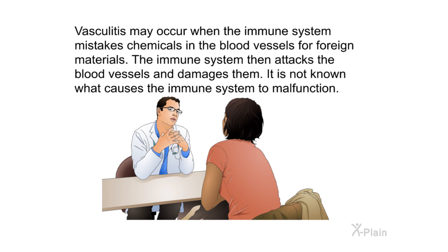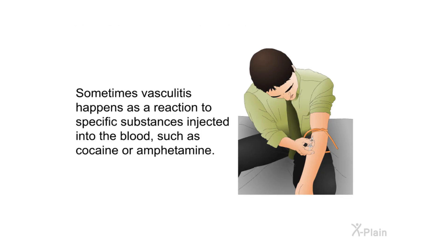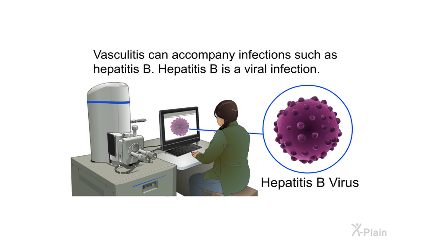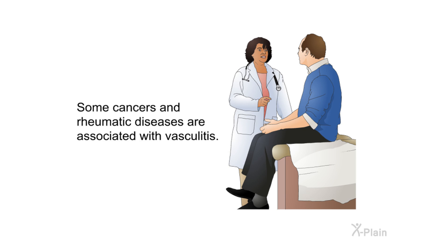Vasculitis may occur when the immune system mistakes chemicals in the blood vessels for foreign materials. The immune system then attacks the blood vessels and damages them. It is not known what causes the immune system to malfunction. Sometimes vasculitis happens as a reaction to specific substances injected into the blood, such as cocaine or amphetamine. Vasculitis can accompany infections such as hepatitis B, a viral infection. Some cancers and rheumatic diseases are also associated with vasculitis.